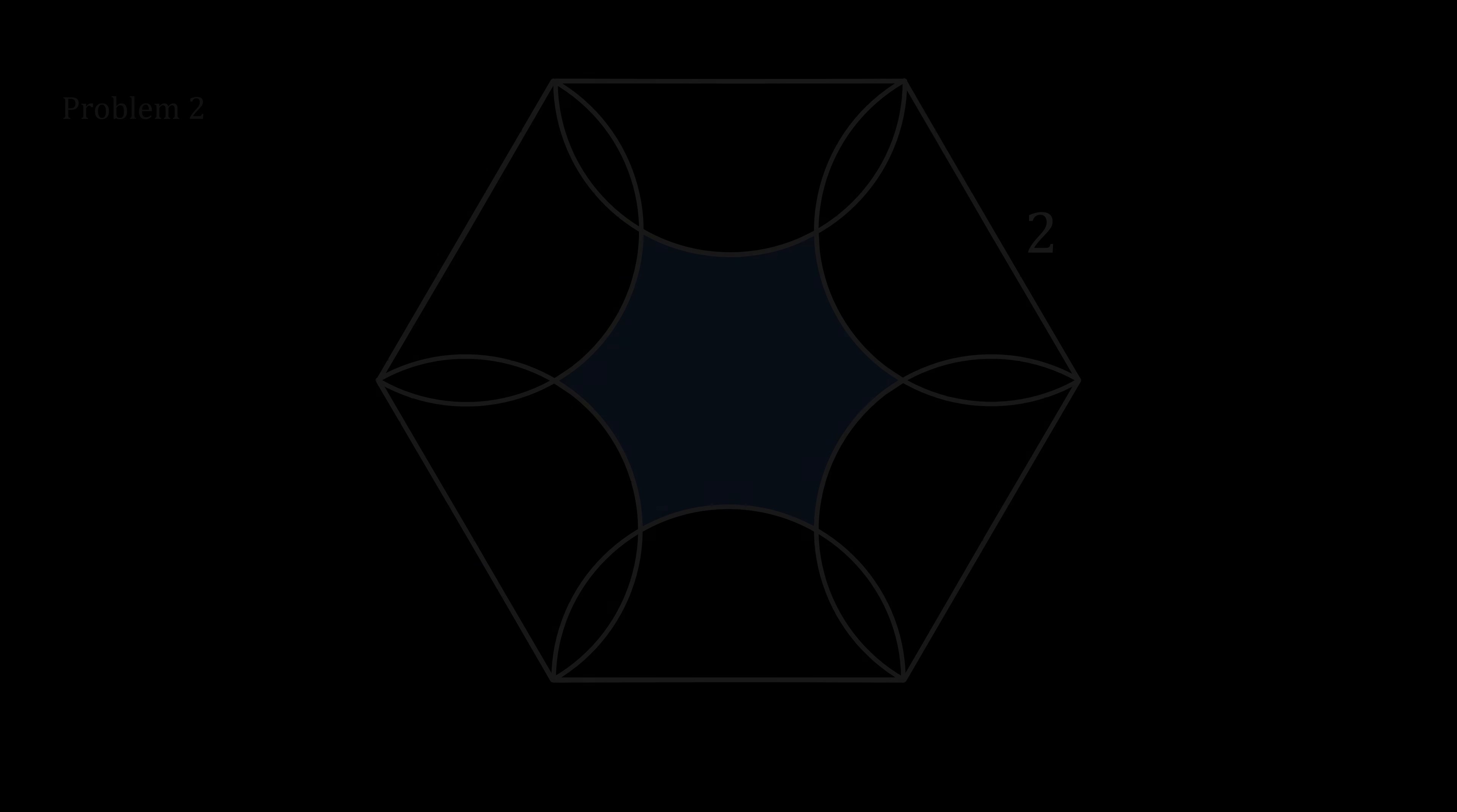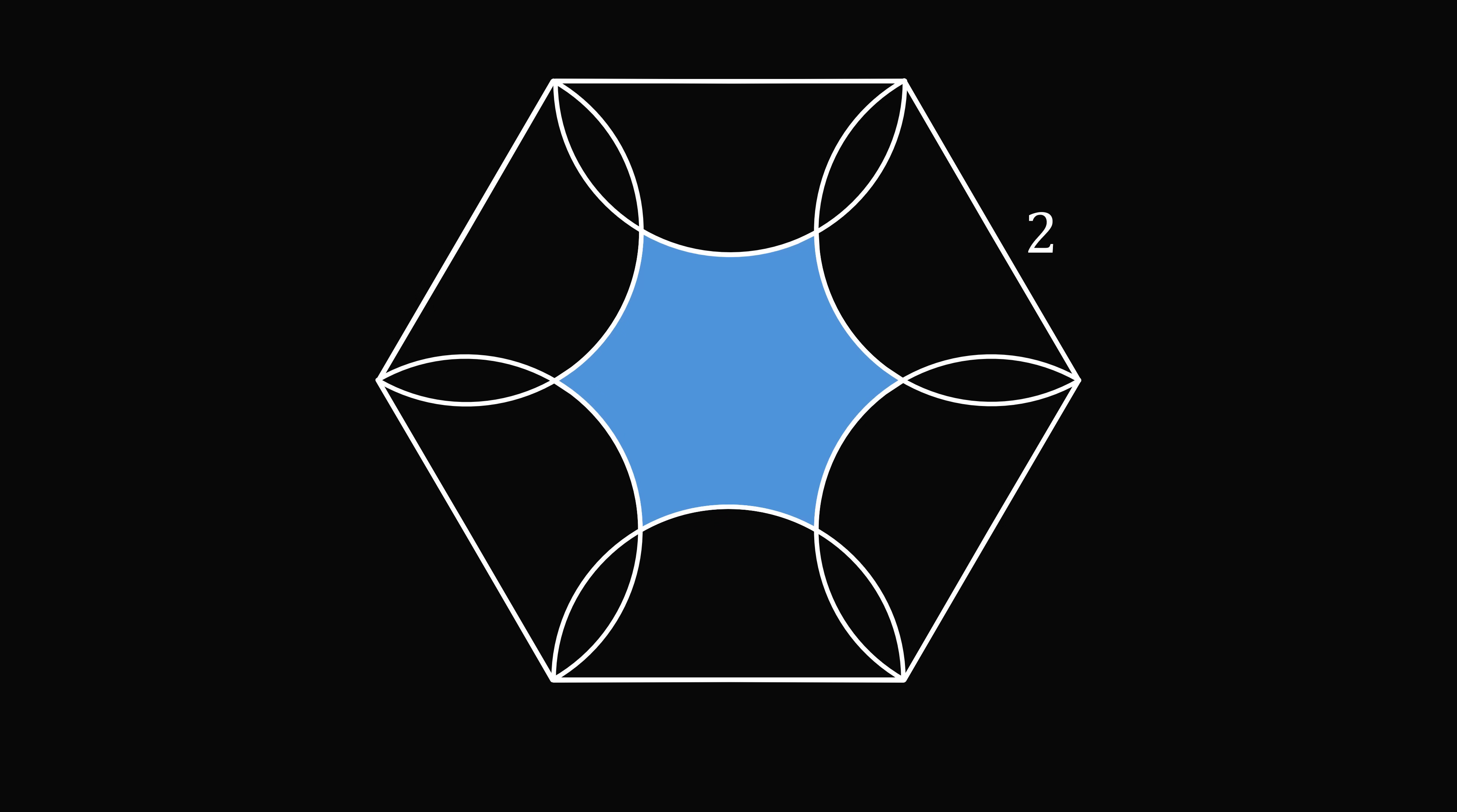Now, let's solve problem 2. There are many approaches to solve this question, but I will show one that I find visually interesting. First, connect opposite vertices of the hexagon to divide the hexagon into six equilateral triangles. Then, connect midpoints of sides that are two sides apart. This will create a mesh of equilateral triangles.